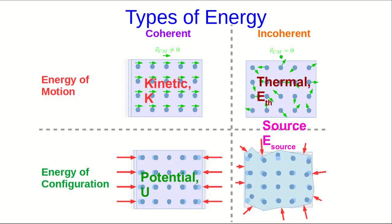Source energy, which has many forms, chemical energy, nuclear energy, light energy, is a little more complicated. It is definitely incoherent, though, and it tends to be a combination of energy due to motions and configuration.